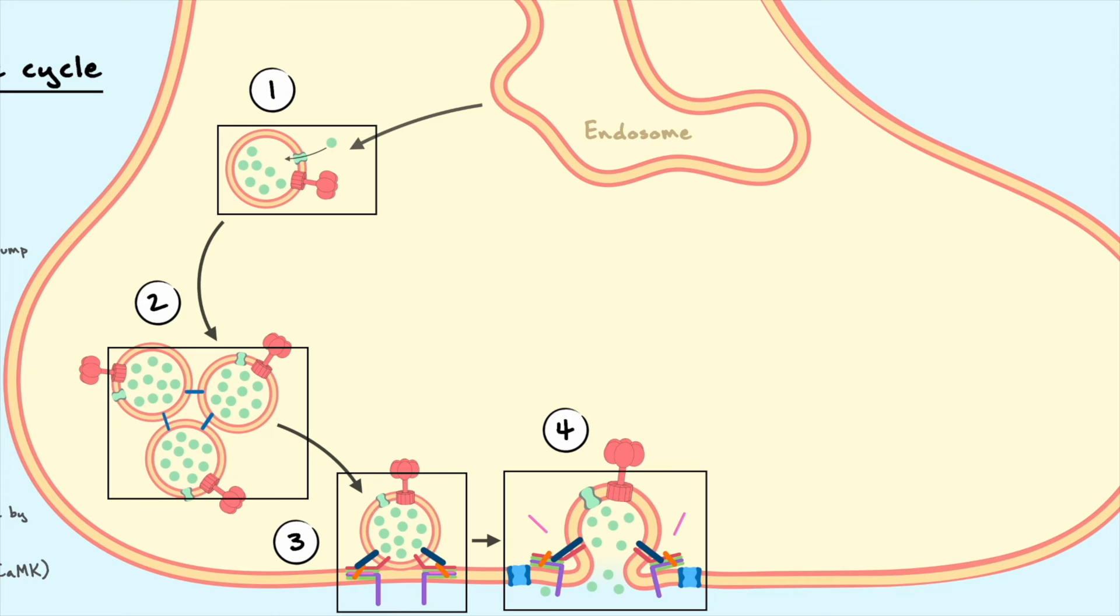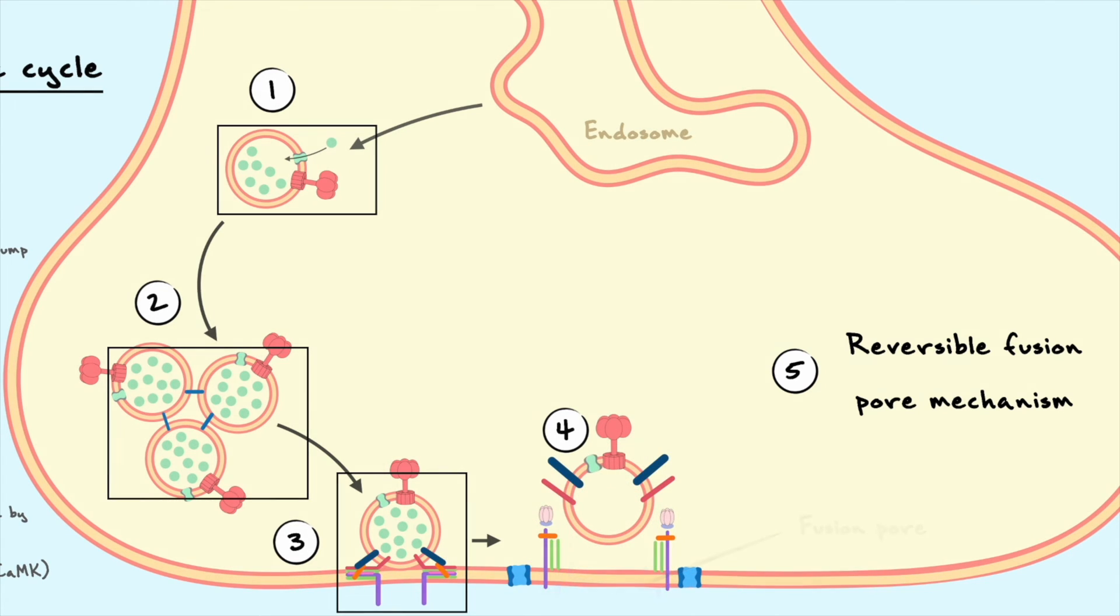Another possible route for recycling is through the reversible fusion pore mechanism which occurs after the fusion process. Given the high quantity of proteins associated with the vesicle, it is good to ask ourselves how do the vesicles manage to maintain all of these proteins in the next rounds of release if the vesicle totally fuses with the membrane. In the reversible fusion pore mechanism, when the vesicle fuses at step 4, it only fuses partially through an opening called the fusion pore. After snare dissociation, the fusion pore can then rapidly close and reform the vesicle. This process of partially opening the vesicle and then closing is also referred to as a kiss.